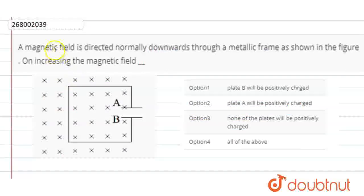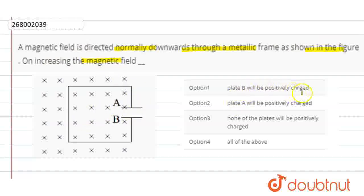I have a question about this. A magnetic field is directed normally downward through a metallic frame, as shown in the figure. On increasing the magnetic field, what happens? The options are: plate B will be positively charged, plate A will be positively charged, none of the plates will be positively charged, or all of the above.